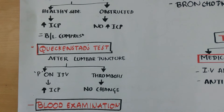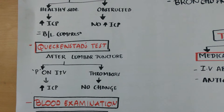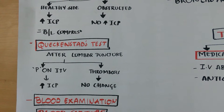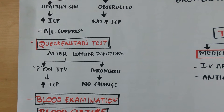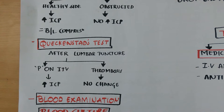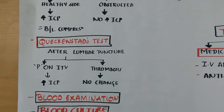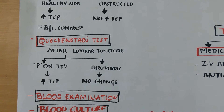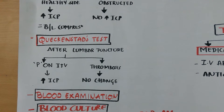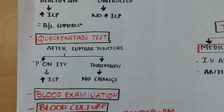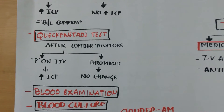Queckenstedt test: after lumbar puncture is done, normally pressure applied on the internal jugular vein will cause increased intracranial pressure. In sinus thrombosis, there will be no change.